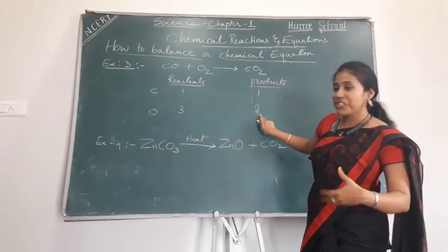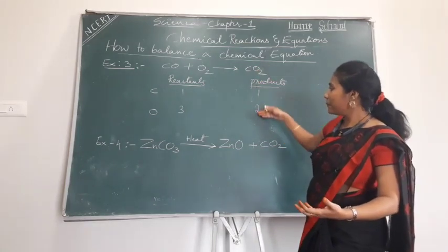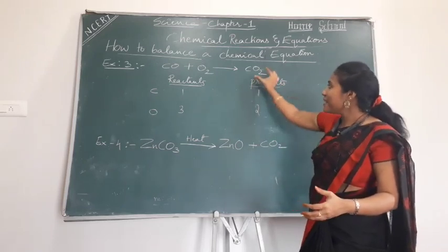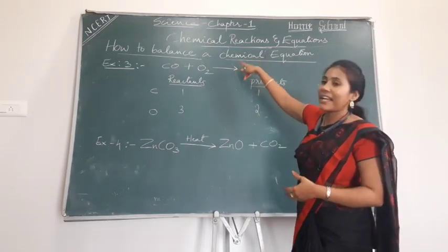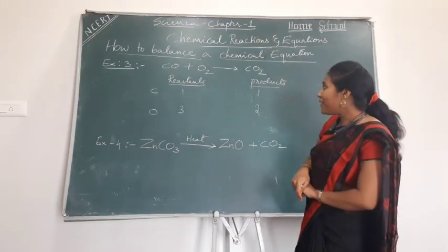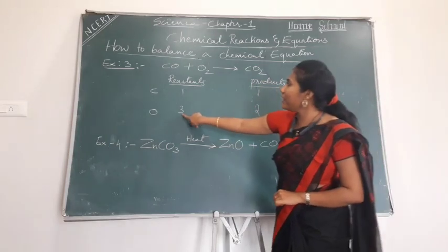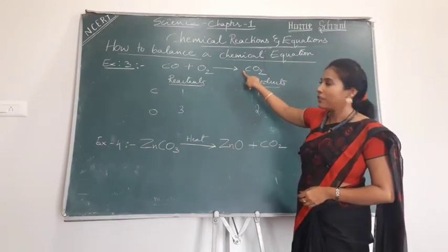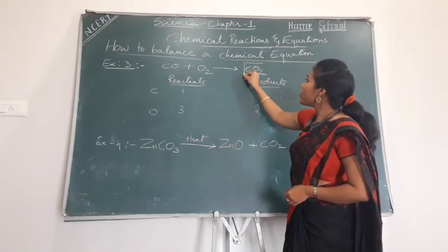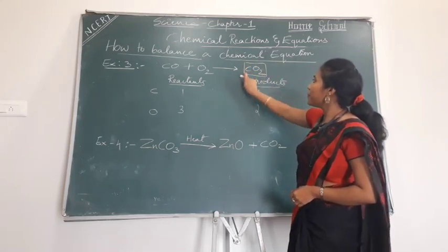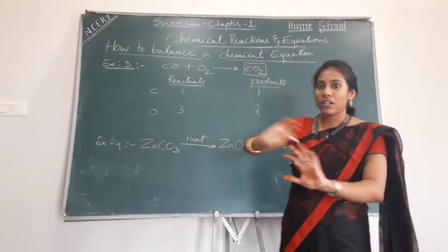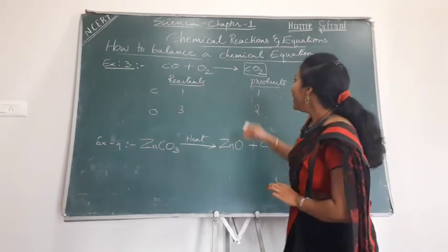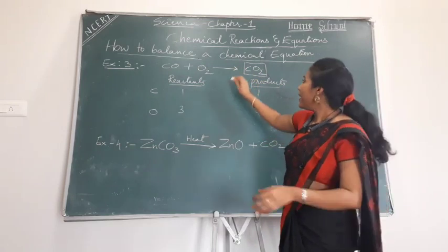Wherever the number of atoms is less, start putting a digit from that side. Here the product side has fewer oxygens, so start balancing from the product side. Put a box around the formula — inside the box you don't change anything, and outside the box on the left side you place the coefficient.